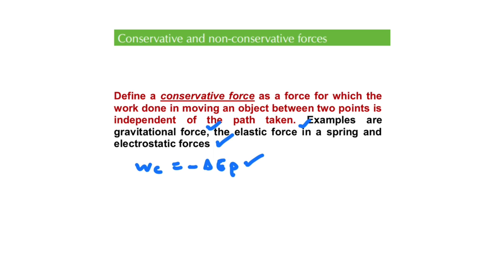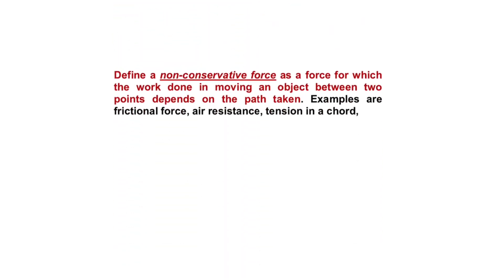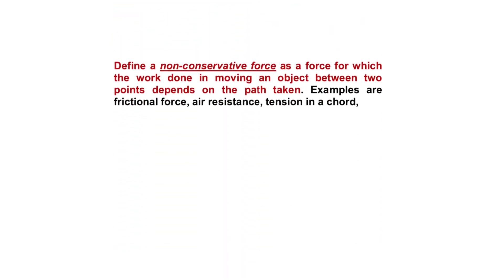A non-conservative force is a force in which the work done in moving an object between two points depends on the path taken — the opposite of a conservative force. Examples include frictional force, air resistance, and tension in a cord. The equation for the work done by non-conservative forces is: W_nc = ΔPE + ΔKE, that is, the change in the object's potential energy plus the change in the object's kinetic energy.